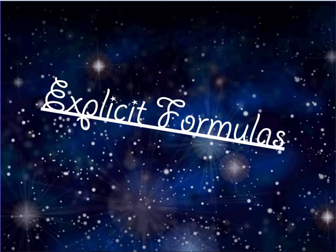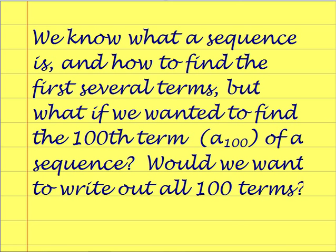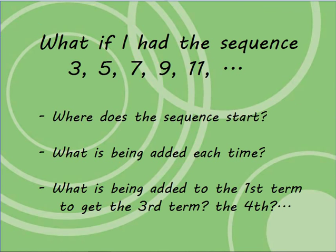Today we're talking about explicit and recursive formulas for arithmetic sequences. First, we'll cover explicit formulas. A sequence is a series of numbers with a pattern, and an arithmetic sequence is when you're adding the same number each time to get to the next term. We can find the first several terms easily, but what if you wanted to find the 100th term? Right now you'd have to write out all 100 terms, which would take a really long time.